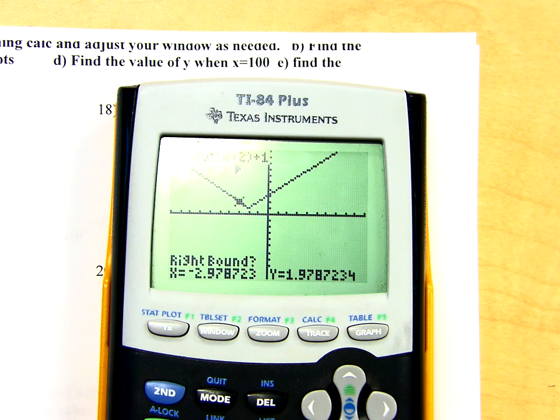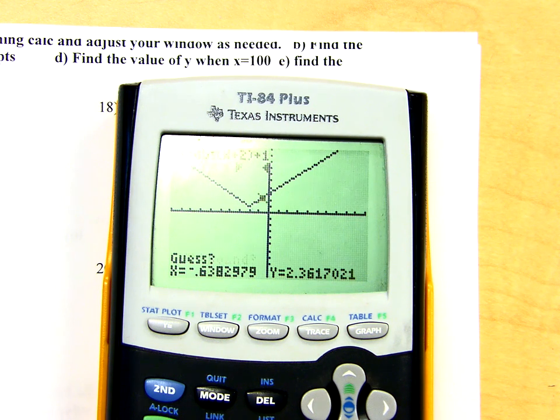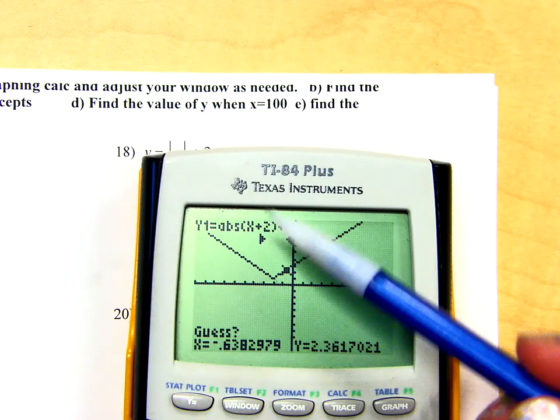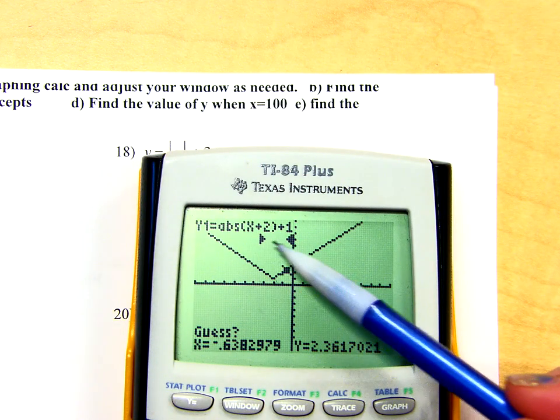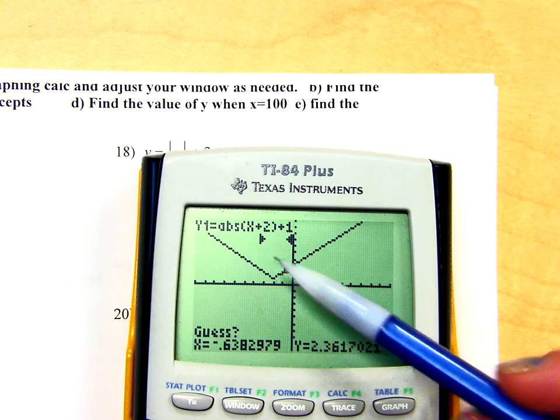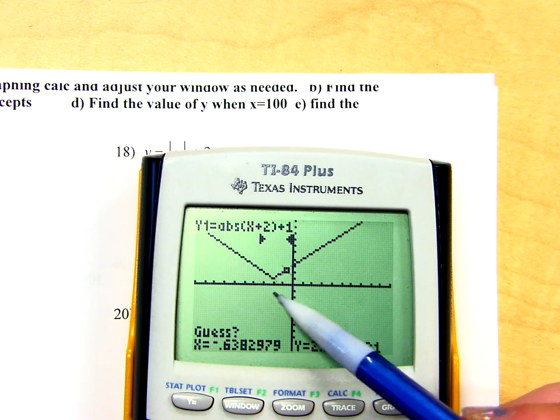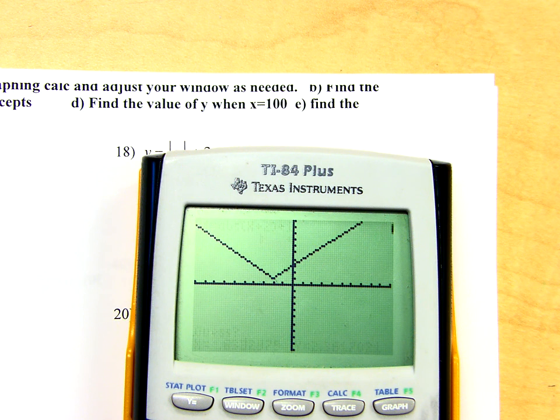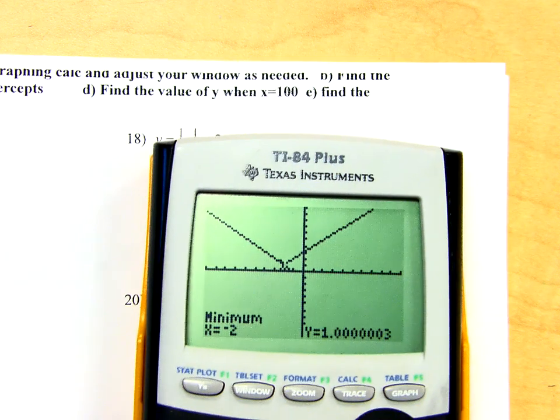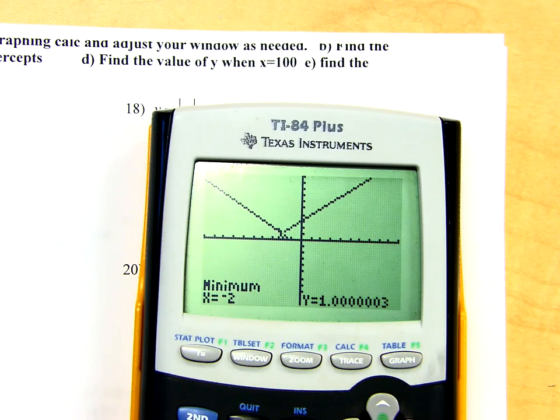Now, it's saying put me to the right of the lowest point. So, I've hit the right arrow key a bunch of times. I'm still going to have those two dark arrows pointing towards each other. And the lowest point is going to be somewhere in between those two arrows. When it says guess, you just hit enter again. And there is my minimum point.